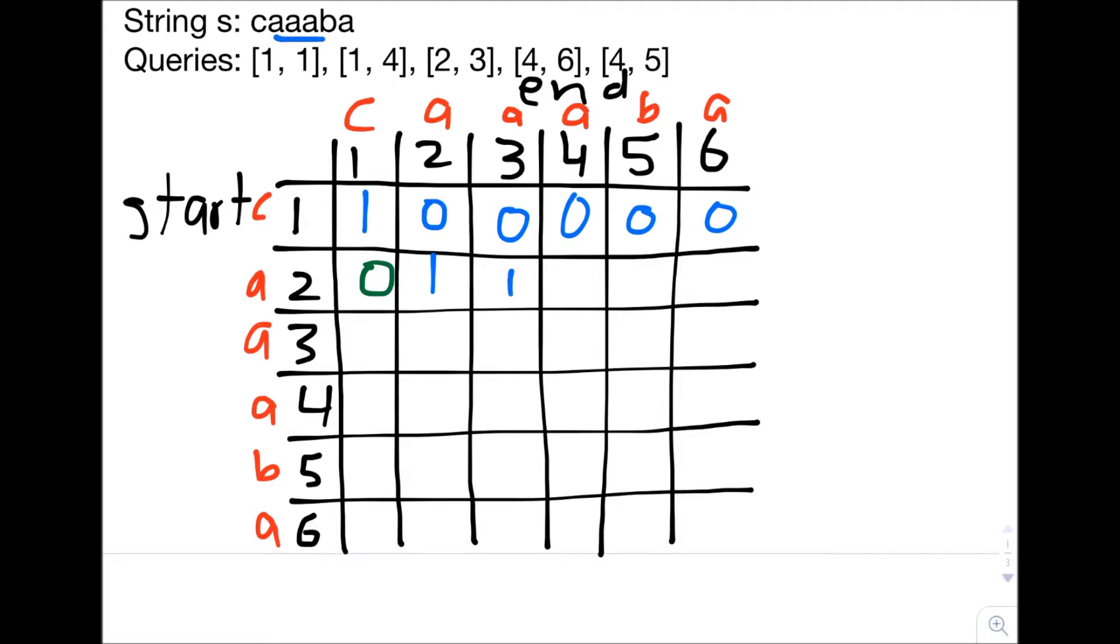2,4 is the letters AAA, which is again a palindrome. 2,5 is AAAB, which is not a palindrome. And 2,6 is AAABA, which again is not a palindrome. We can fill in the rest of the table using the exact same method we used to fill in the first two rows.